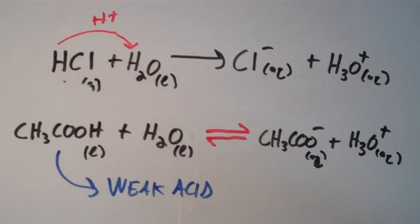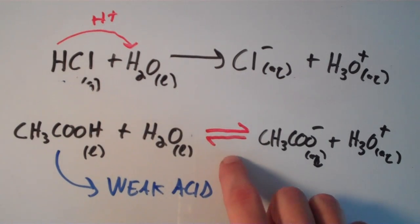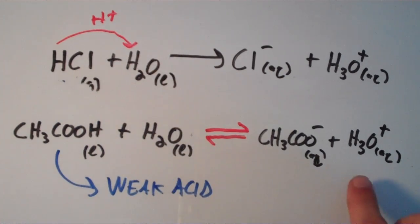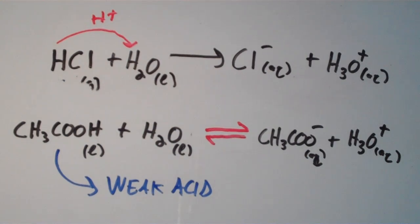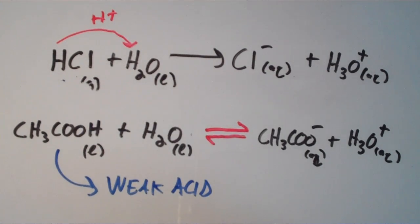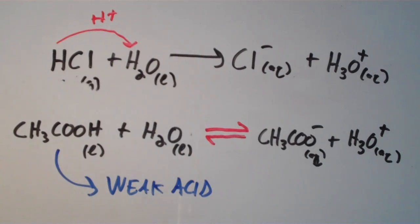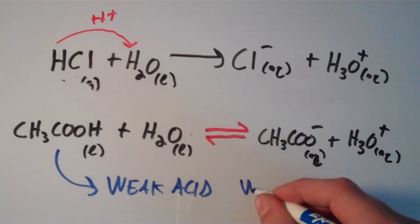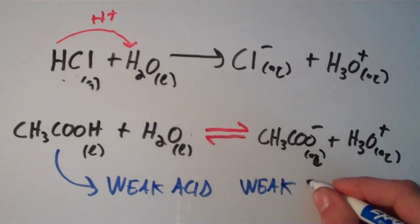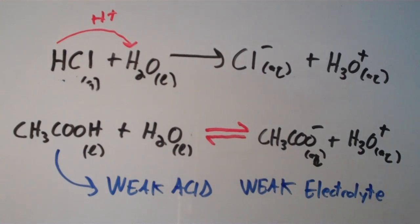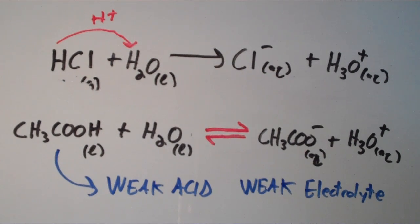There's reactants becoming products, but there's also products becoming reactants, and the way we express this is by using two half arrows. When we did the strong acid HCl, we used a single arrow, but with a weak acid we use half arrows because you have reactants becoming products and also products becoming reactants. If you have a weak acid or weak base reacting with water, it forms ions but not nearly to the extent that a strong acid does, so this would result in a weak electrolyte. If you want to know if an acid or base will produce a strong or weak electrolyte, you need to know if it's a strong or weak acid.